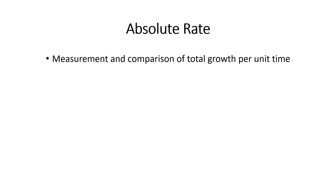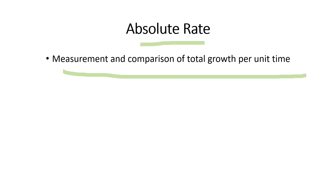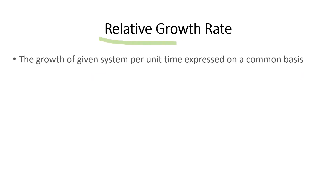There are two additional measures: absolute growth rate and relative growth rate. Absolute growth rate is the measurement and comparison of total growth per unit time, applicable in the case of plants. Relative growth rate is the growth of a given system per unit time expressed on a common basis.